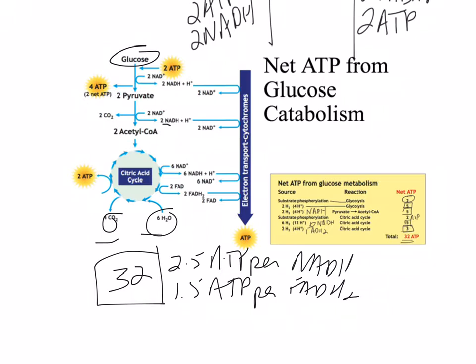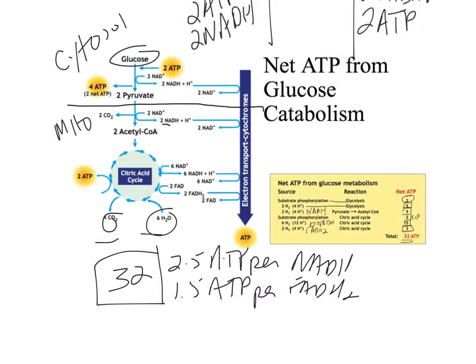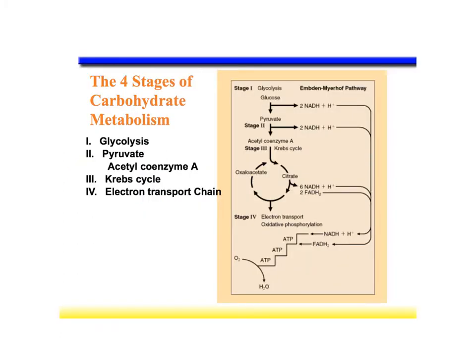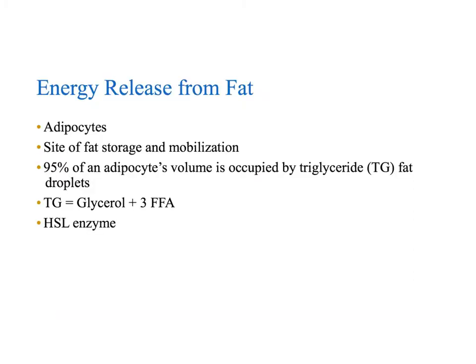To summarize the cellular location: glucose to pyruvate all occurs in the cytosol, and pyruvate gets shuttled into the mitochondria as acetyl-CoA. This is a great summary of electron carrier production and their shuttling to the electron transport chain through oxidative phosphorylation. Now we'll conclude with fat metabolism and beta oxidation.